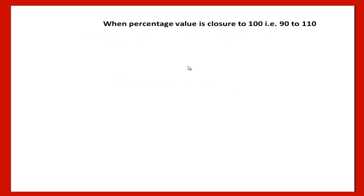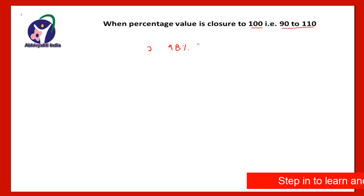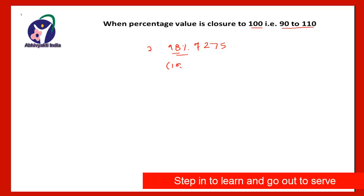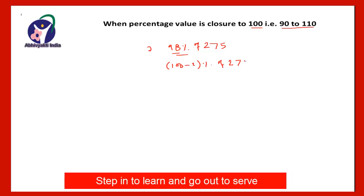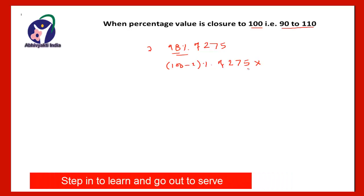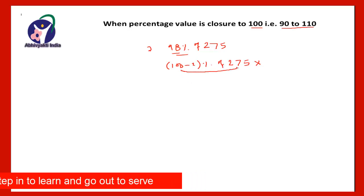Here is the first method: when the percentage value is closer to 100, that is 90 to 110. Suppose you have to find 98% of 275. Now, here the percentage is closer to 100, so this we can write as 100 minus 2% of 275. There is no need to do this step because you can do this orally or in your mind. 100 minus 2 is 98. It means 100% of 275 minus 2% of 275.